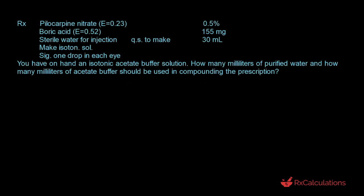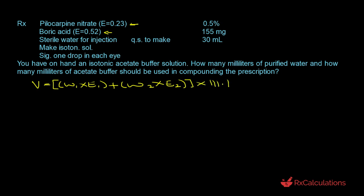In this question, there are two ingredients: pilocarpine nitrate and boric acid. The version of the White Vincent equation to use is V equals, in brackets, Omega-1 times E1 plus Omega-2 times E2, all multiplied by 111.1, where subscript 1 refers to pilocarpine nitrate and subscript 2 refers to boric acid. Since Omega must be in grams, we first determine the weight of each ingredient for the 30 mL preparation.